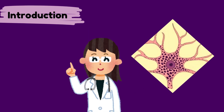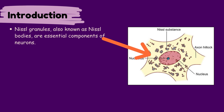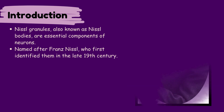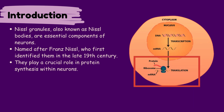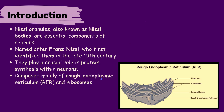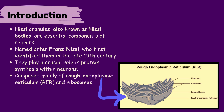Introduction. Nissl Granules, also known as Nissl bodies, are essential for the function and survival of neurons. They were first discovered by Franz Nissl in the late 19th century and are crucial for protein synthesis. These granules are mainly composed of rough endoplasmic reticulum and ribosomes, making them the protein factories of neurons.